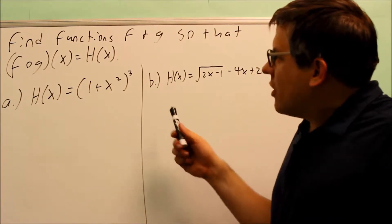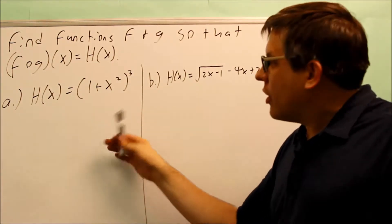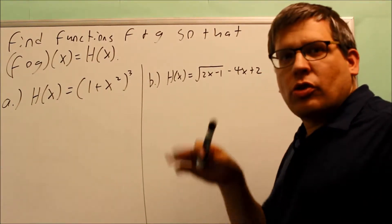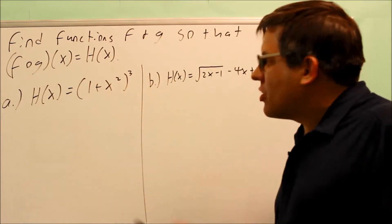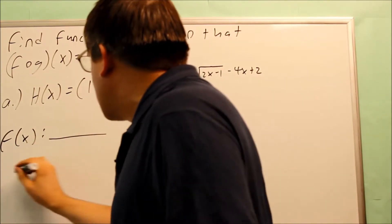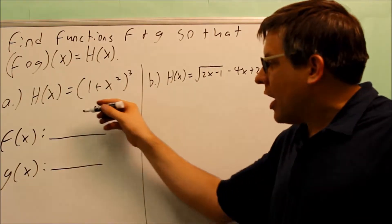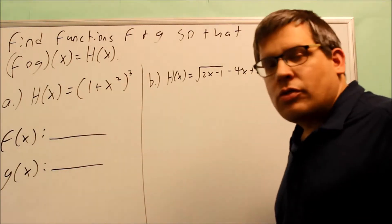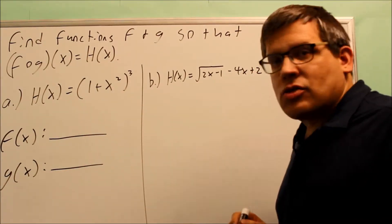What they're saying is that they're going to give you an h of x, and they're saying that I put two functions together and I got this as a result. What they want to know is what are the two original functions that you put together in order to get this as a result. So they want to know what f of x is and what g of x is, so that way if I put the g into the f, I'll get h of x.